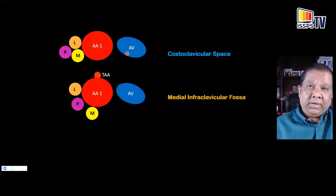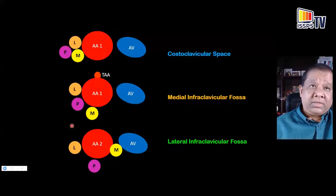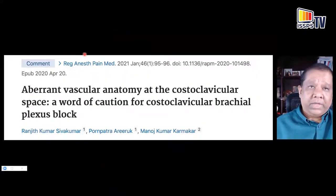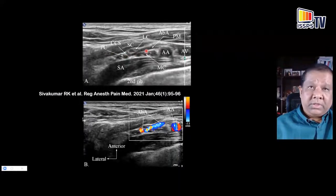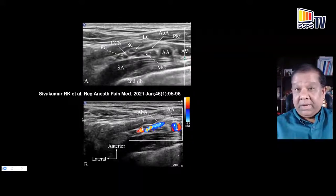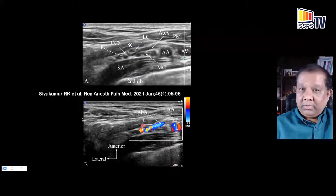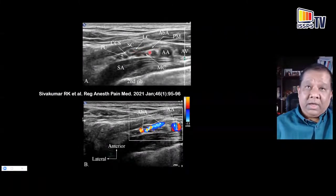This also illustrates how the anatomical relationships of the cords change as you go from the costoclavicular space to the lateral sagittal location. It's not surprising that an injection in the costoclavicular space has faster onset and denser block when using low volumes of local anesthetic — and this forms the basis of some of our work I will present shortly.